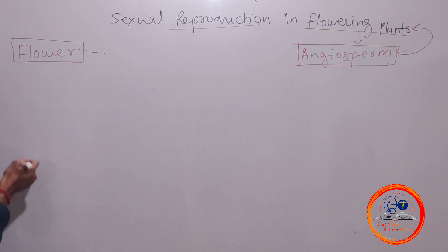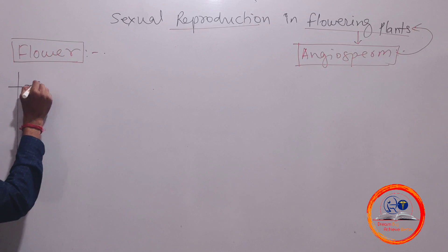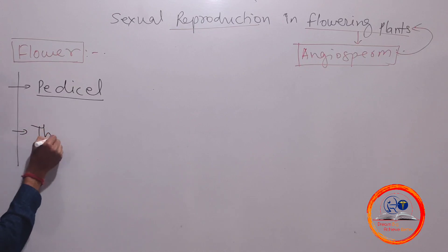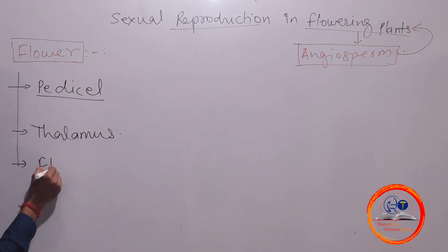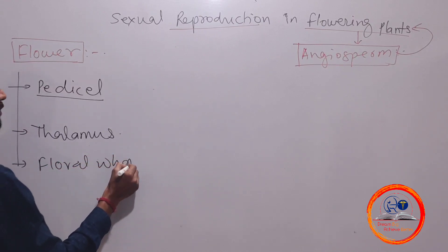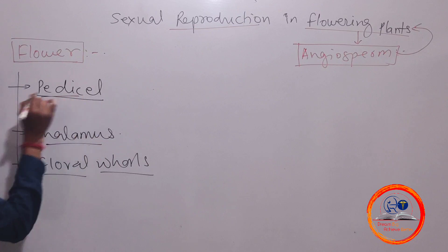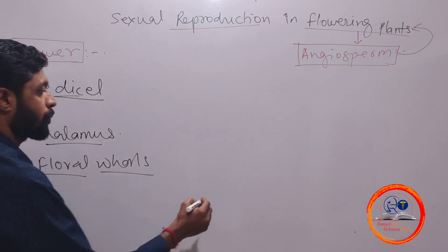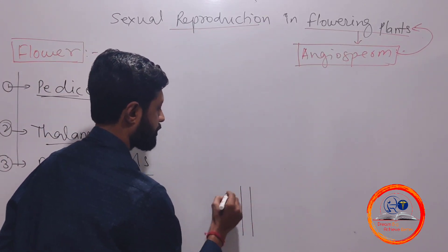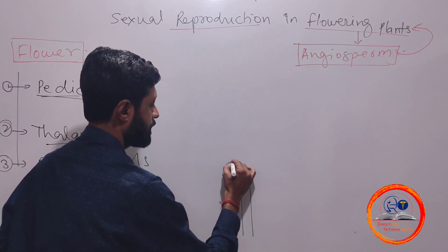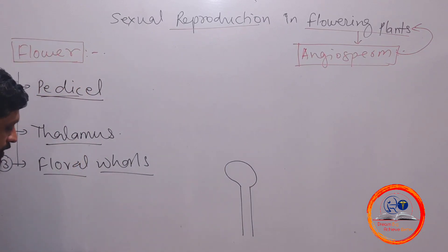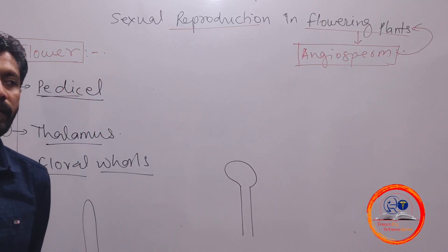A flower has three main parts: the pedicel, the thalamus (also called the receptacle), and the floral whorls. The pedicel is the stalk of the flower. There is then a condensed part called the thalamus. The thalamus is condensed because it has a long and elongated system that is compressed into the floral structure.